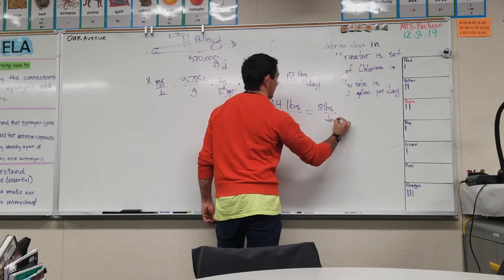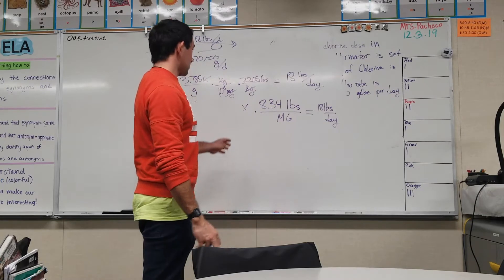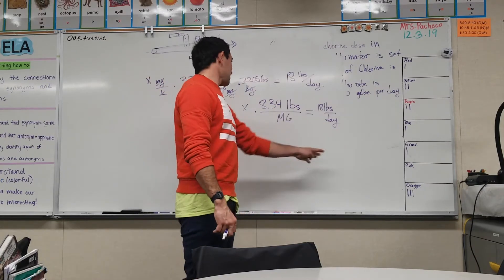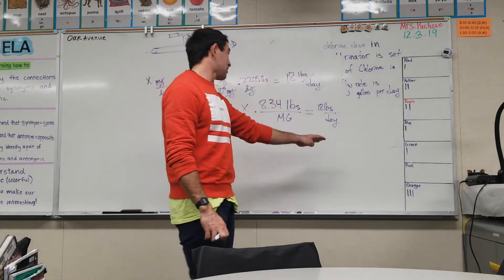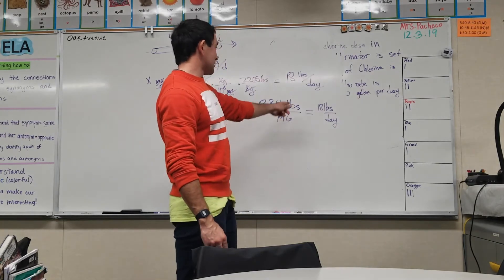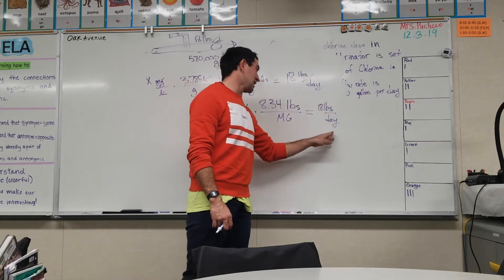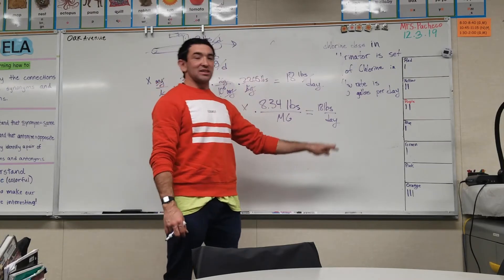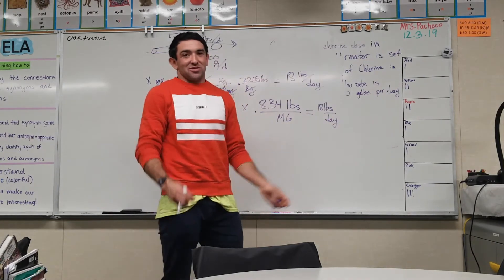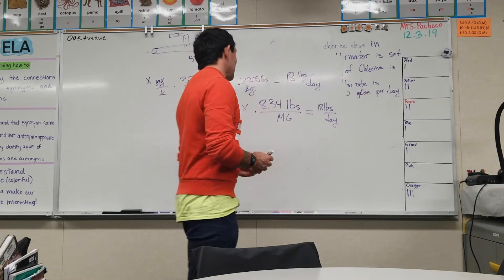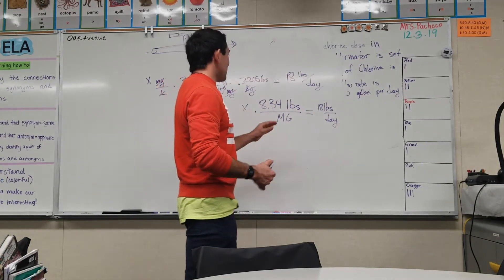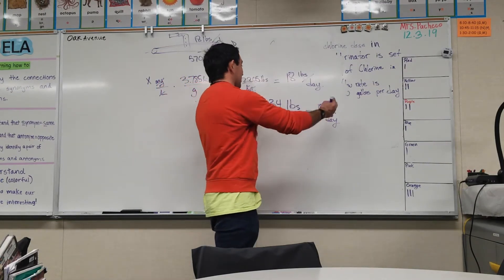We have a number, we have an x, and we want to solve for x. But here's the bad part: the suffixes are different. You got pounds per million gallons and you got pounds per day. That's a measurement of water, that's a measurement of time.